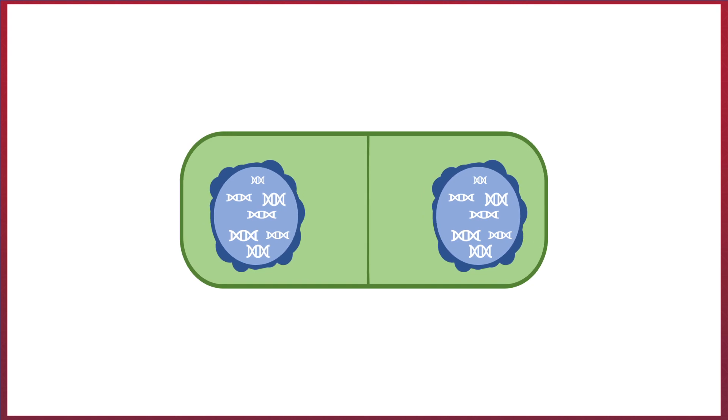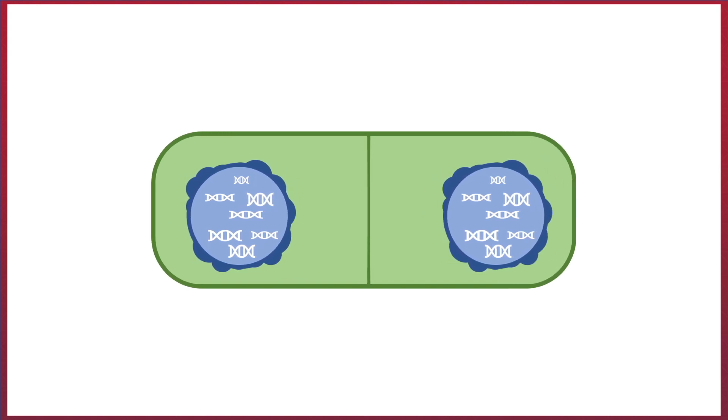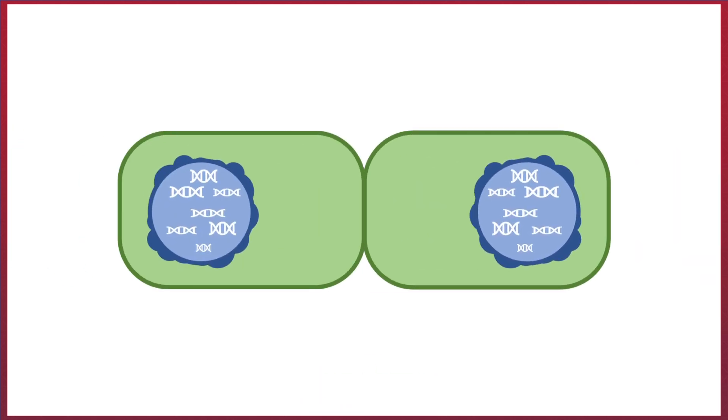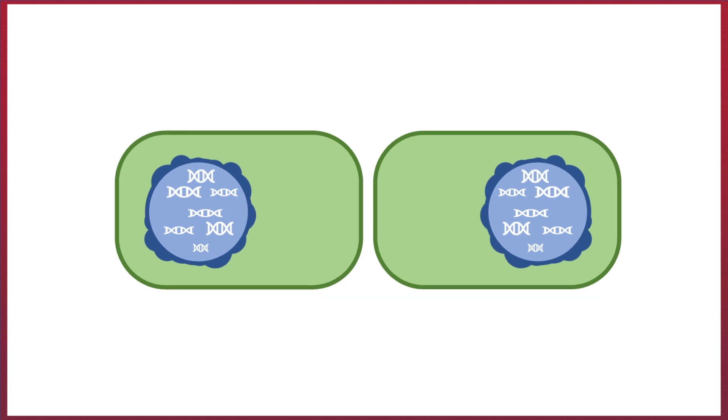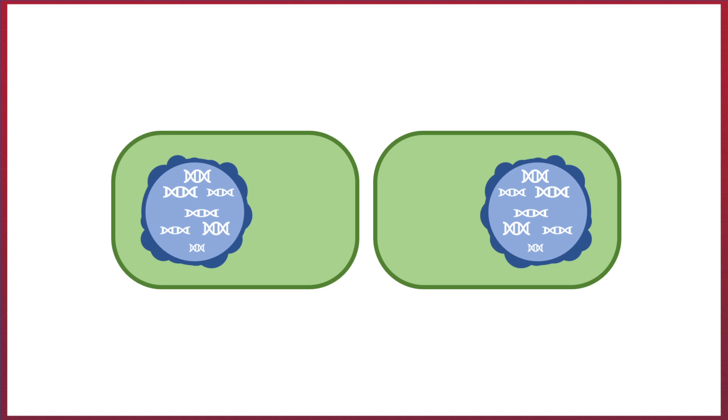Before the cell splits, a new dividing wall is formed down the middle of the cell called a septum. These cells are surrounded by a cell wall as well as a cell membrane, which will also need to be replicated before the cell divides. Once this is formed, the septum splits down the middle, releasing the two cells.